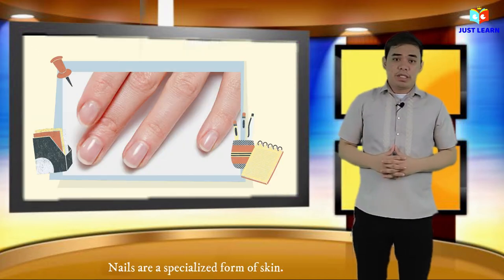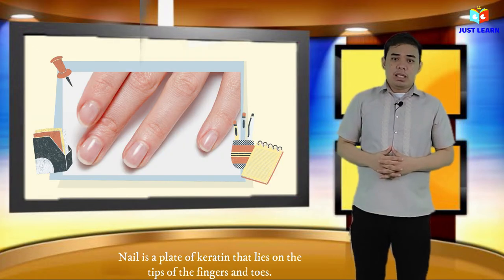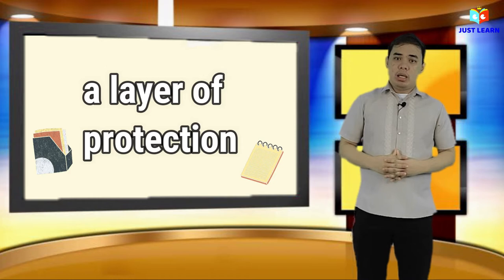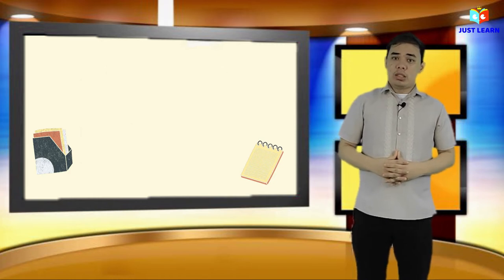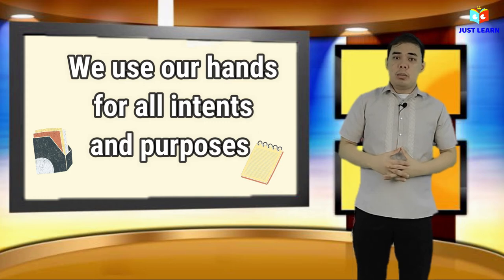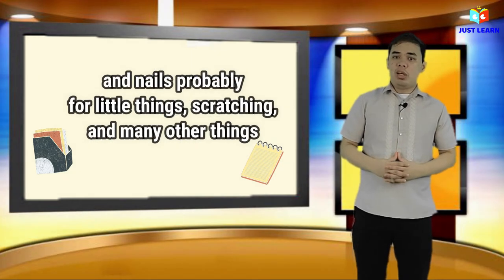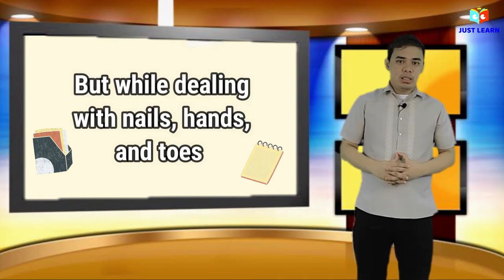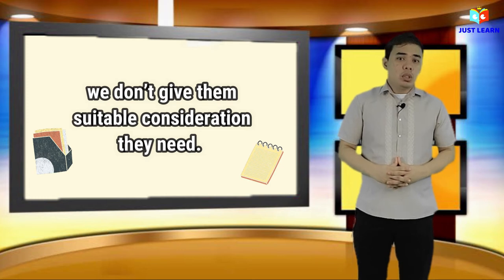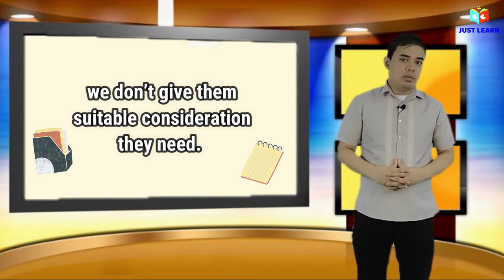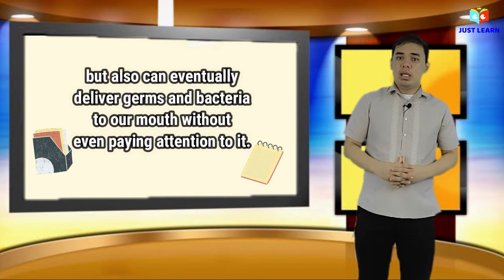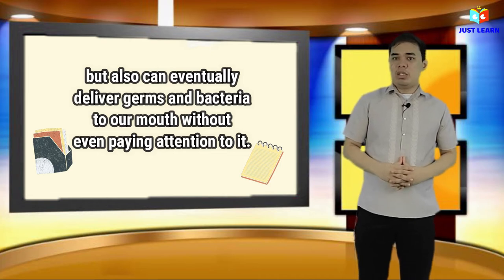Nails are a specialized form of skin. Nails are a plate of clarity that rest on the tips of the fingers and toes. The main purpose of nails is to serve as a layer of protection for our fingers and toes. We use our hands for all intents and purposes, and nails are used for scratching and many other things. But while dealing with nails, hands, and toes, we don't give them the suitable consideration they need.